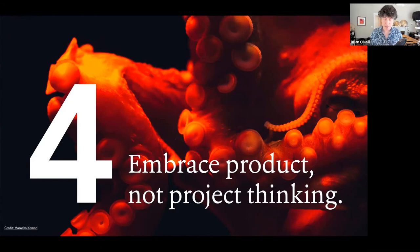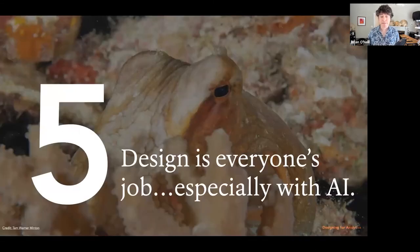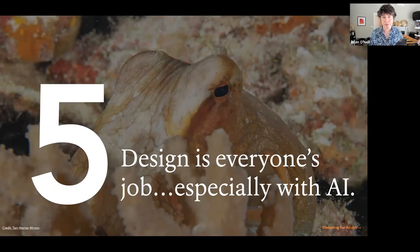Number four is to embrace product and not project thinking. There's a lot of movement in this space to think about, especially with machine learning and AI, that we need to be thinking long term about these as products and not projects. You're not building a one off one time solution when you're working with machine learning. Most of the time, you're building in a change. And that change needs to be treated as if it was almost a commercial product. And there's a lot we can learn from the software teams about how to do this. And the data product manager and design skills are two of the big things that are often missing from data science and analytics teams. And the last one here is that design is everyone's job, especially with AI. Design is not just for designers. Design is something that we cannot escape. So apply intent to those designs instead of the design being a byproduct.